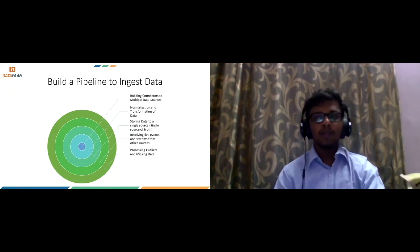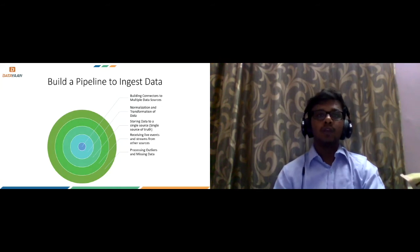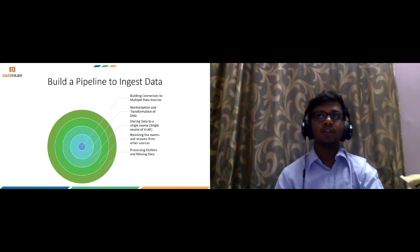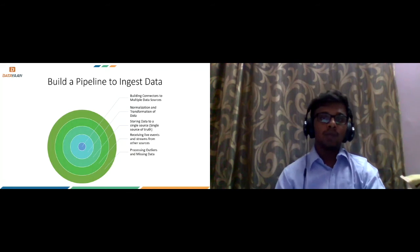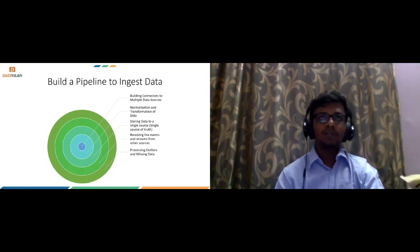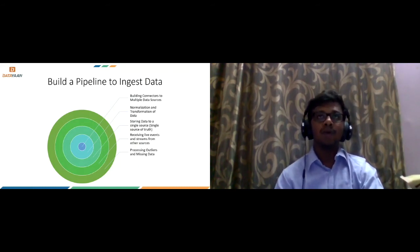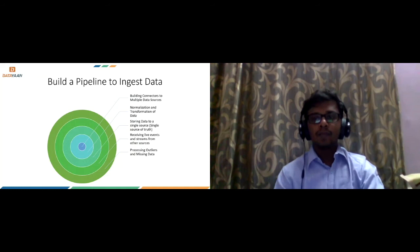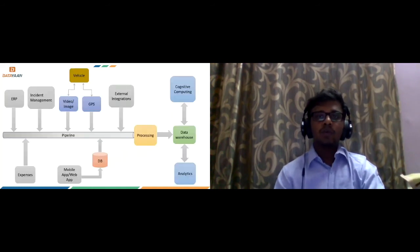And then we build a data pipeline for ingesting data. We need to set up multiple connectors that are going to connect to different data sources. It could be API based, it could be a file system, or it could be simply events that are being pushed occasionally. We need to build a pipeline for ingesting all this data, and then we need to process it. There will be outliers and there could be missing data, so we need to devise a strategy to fix all those outliers and missing data. And then we store it to a single data warehouse from which we can use that data for analytics and cognitive computing.